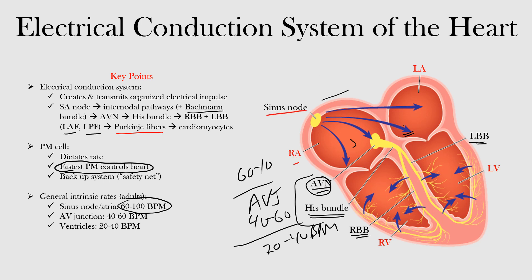To review the safety nets: the sinus node fires between 60 and 100 beats per minute; the AV junction between 40 and 60; and ventricular cells between 20 and 40. If the sinus node has dysfunction and isn't working properly, the next backup pacemaker may come from the AV node. If there's a problem at the AV node, it may come from the His bundle; if the His bundle fails, from the bundle branches, and so on. Each level serves as a safety net for the one above it.